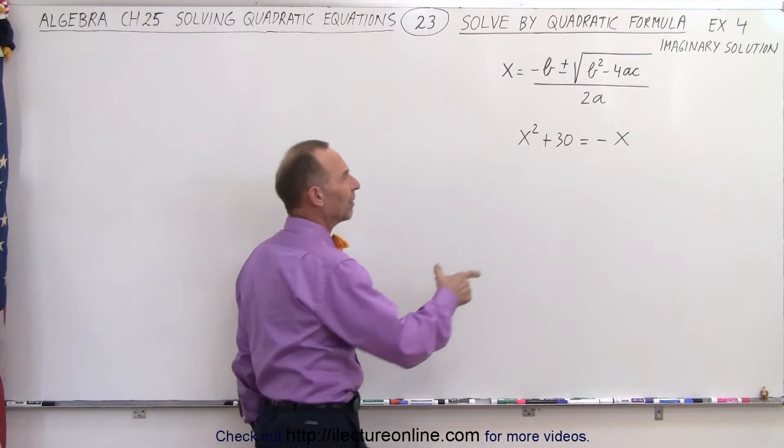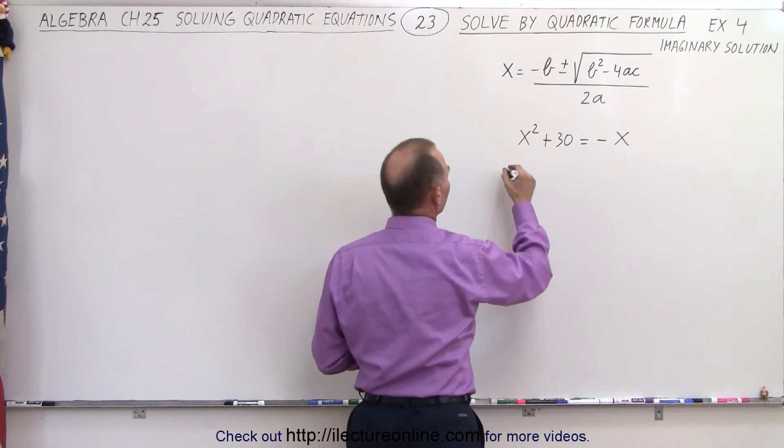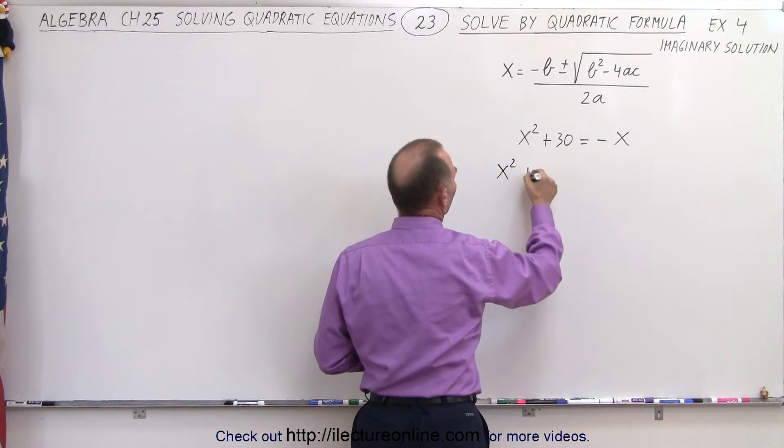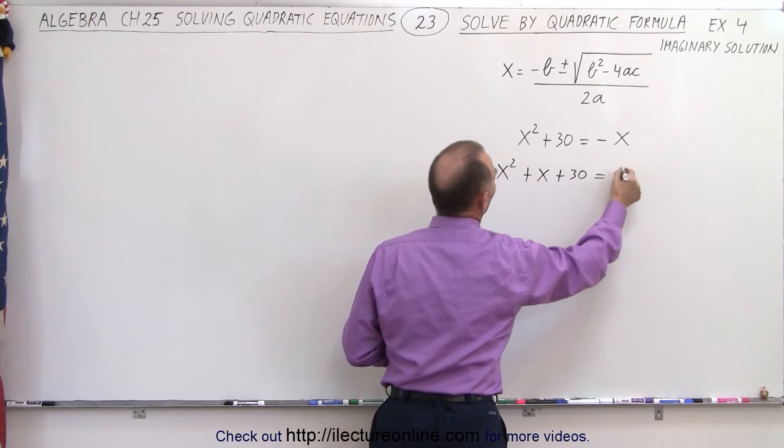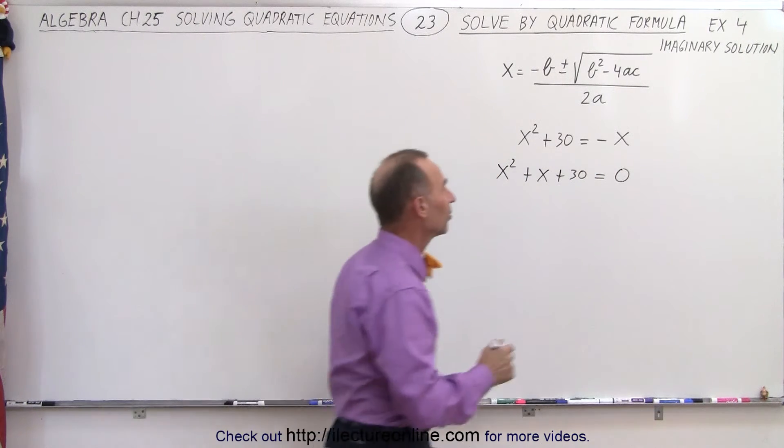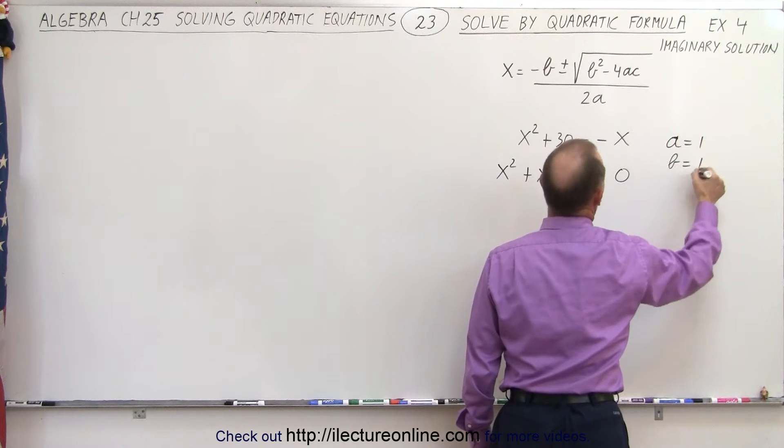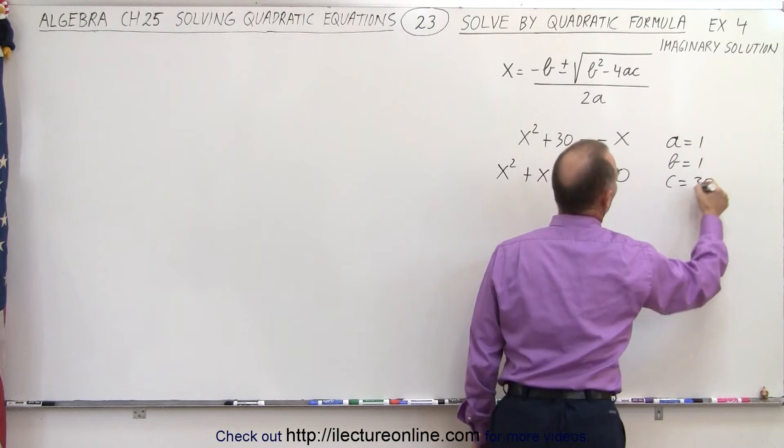Notice that we don't have this in a standard format. We want to move all the terms over to one side, so this becomes x squared plus x plus 30 equals 0. Now we're able to identify a, b, and c. In this case, a is equal to 1, b is equal to 1, and c is equal to 30.